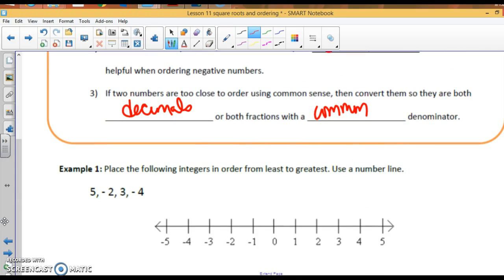Alright, let's take a look at this. Place the following integers in order from least to greatest. Use a number line. So, 5 is here, negative 2 is here, 3 is here, negative 4 is here. We're going from least to greatest. Least would be negative 4, then negative 2, then 3, then 5. The negative screw kids up. Think about it. Farther left is smaller. So, negative 4 is smaller than negative 2.